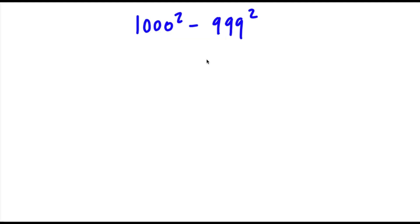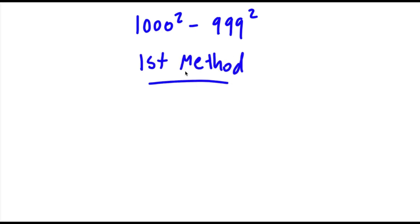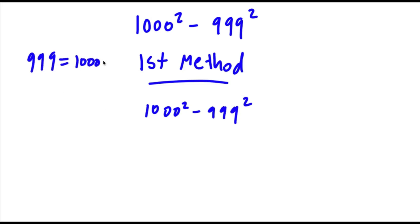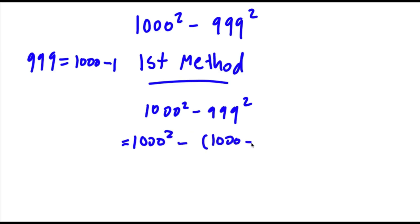I actually have two methods to solving this problem. So the first method: we start with 1000 squared minus 999 squared, and 999 is the same thing as 1000 minus 1. So now I'm going to replace 999 with 1000 minus 1. So now I have 1000 squared minus (1000 minus 1) squared.